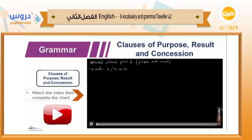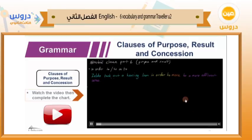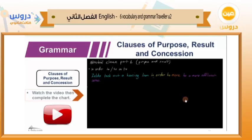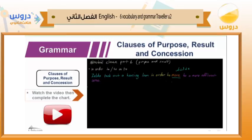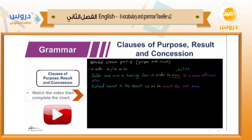'In order to' and 'so as to' are two multi-word conjunctions that have basically the same meaning. For example: 'Zelda took out a housing loan in order to move to a more affluent area.' Affluent means wealthy. The 'in order to' structure is followed by an infinitive. Another example: 'Richard moved to the desert so as to avoid the rat race.' Again, followed by an infinitive. So these two conjunctions have the same meaning.